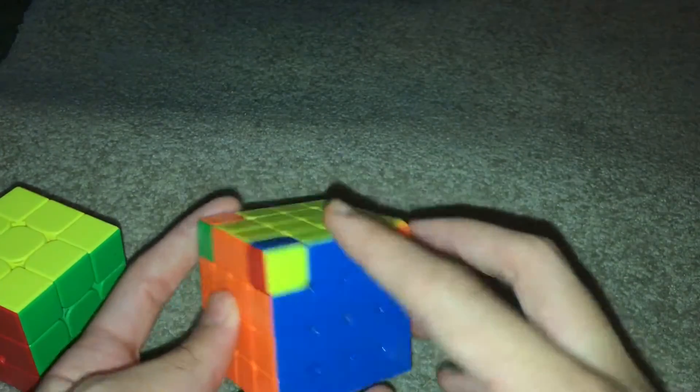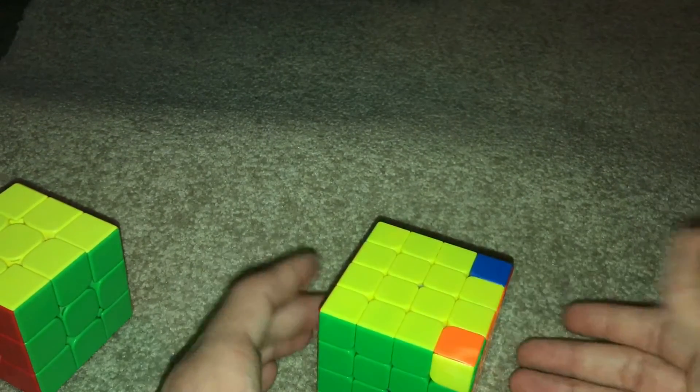I got two. These two need to swap, but that's impossible if you're doing that on three by three. That means you have PLL Parity.